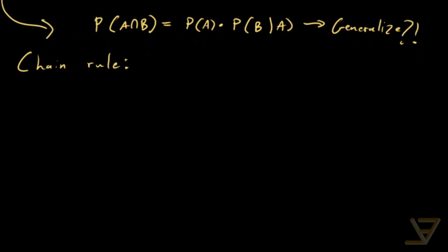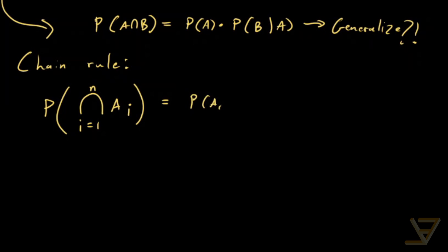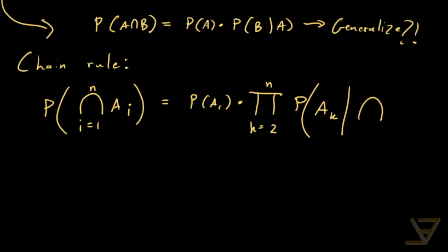What the chain rule states in its most notation-heavy form — which I'm going to make less notation-heavy in just a second — is: P of the intersection of A_i for i equals one through n is equal to P of A_1 times the product from k equals two to n of the probability of A_k given the intersection of A_i from i equals one through k minus one.